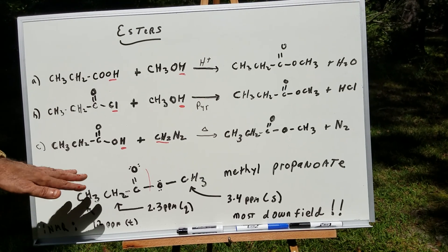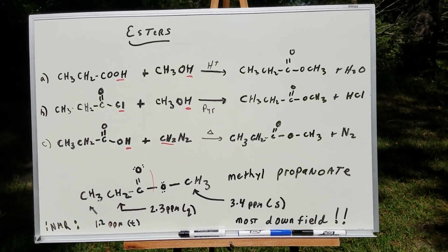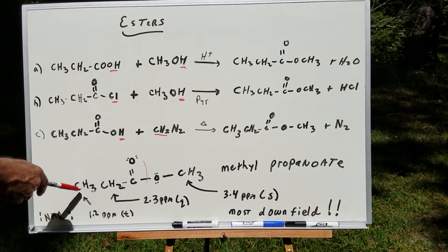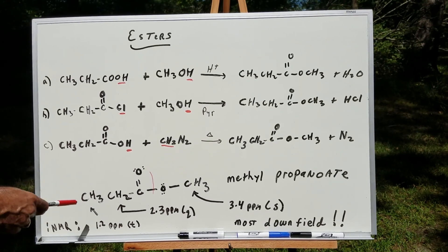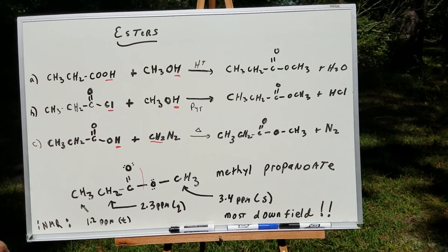Now, when you got this final product and you wanted to do an NMR on it, you would get three NMR signals. Upfield, at about 1.2 ppm, you would get a triplet. Why is it a triplet? Because these protons are next to a carbon with two H's.